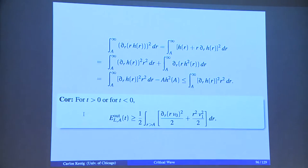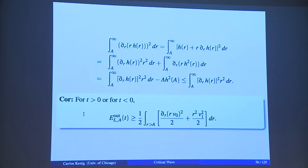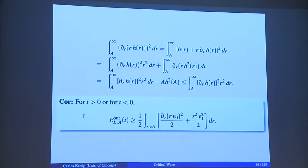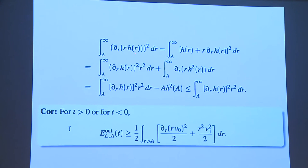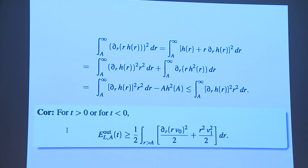Let me recall a calculation — nothing more than an integration by parts. We're doing all of this in 3D. The integral from A to infinity: the DDR expression where R is inside equals exactly the DDR where R is outside minus this constant term A·H²(A), reflecting the endpoint. It's important that there's a minus here, so this is always smaller than that.